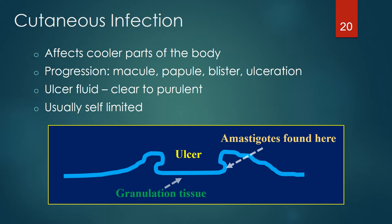Lesions classically start with a macule and progress to a papule, blister, and ulceration. The fluid from these ulcers can be clear to purulent. These skin ulcers are usually self-limited unless secondarily infected. Amastigotes are located at the leading edge of the ulcer, not in the base, which will essentially only demonstrate granulation tissue.